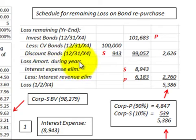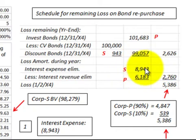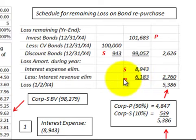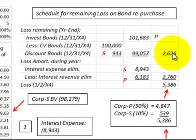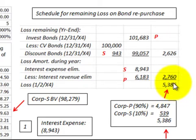For the loss from amortization during the year, we have interest expense eliminated of $8,943 from the subsidiary's schedule, less the interest revenue eliminated of $6,183 from the parent's amortization schedule, giving a net amount of $2,760. Totaling the remaining loss and the amortization loss for the year gives a total loss on 12/31/X4 of $5,386.